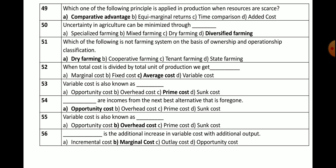Question number 51: Which of the following is NOT a farming system on the basis of ownership and operationship classification? Options: dry farming, cooperative farming, tenant farming, or state farming. The correct answer is dry farming — it is not a farming system on the basis of ownership and operationship, because dry farming is a type of farming.